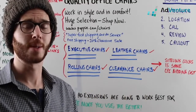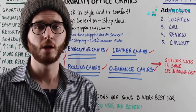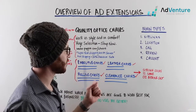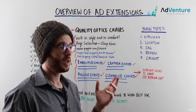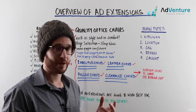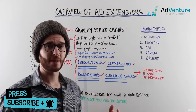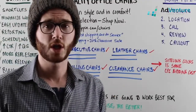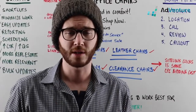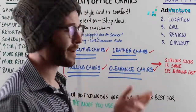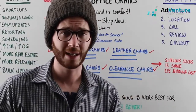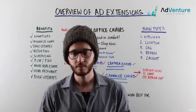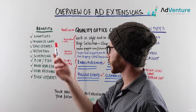You could use sitelinks for different sales you're running or totally different categories. For example, you might want a sitelink for file cabinets. Why? Because somebody searching for office chairs might also be in the market for file cabinets — they might see that sitelink and click through to check out your file cabinets. So that's the concept of shortcuts.